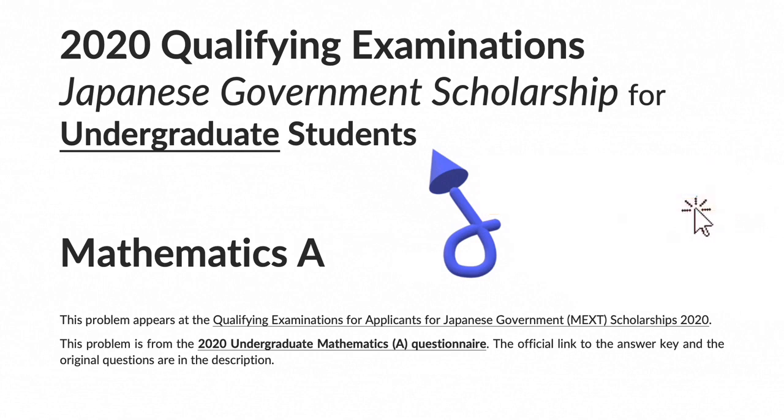This problem appears at the Qualifying Examinations for Applicants for Japanese Government MEXT Scholarships 2020. This problem is from the 2020 Undergraduate Mathematics A Questionnaire. The official link to the answer key and the original questions are in the description.